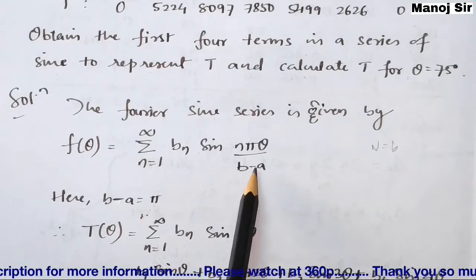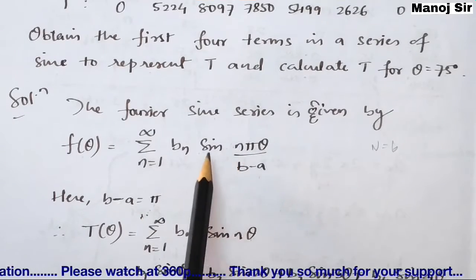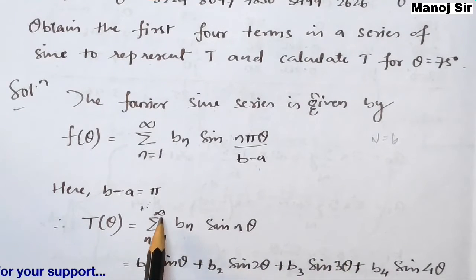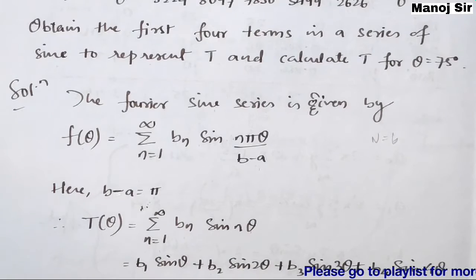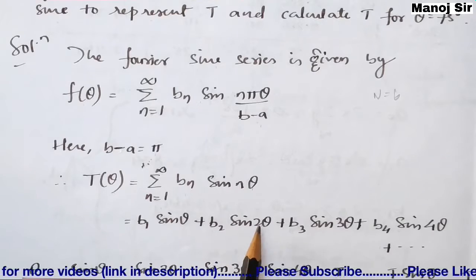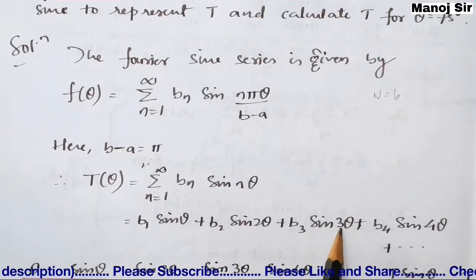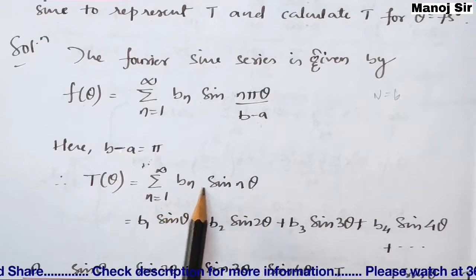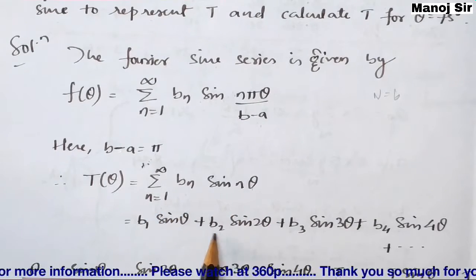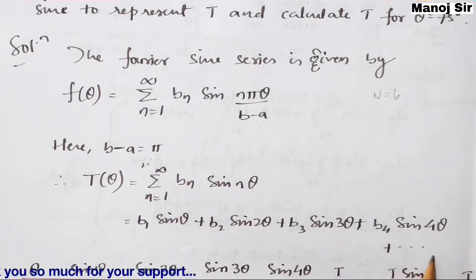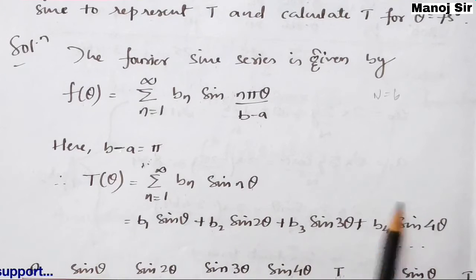Substituting b minus a equals pi, the pi cancels and we are left with sin(nθ). So T(θ) equals summation from n equals 1 to infinity of b_n sin(nθ). We need to find up to b4, so this becomes: T(θ) = b1 sin θ + b2 sin 2θ + b3 sin 3θ + b4 sin 4θ, and so on, but we only need up to the fourth term.